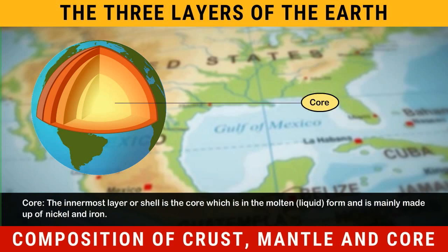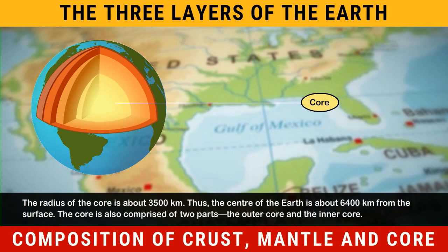The innermost layer or shell is the core, which is in molten liquid form and is mainly made up of nickel and iron. The radius of the core is about 3,500 km, and the center of the Earth is about 6,400 km from the surface.